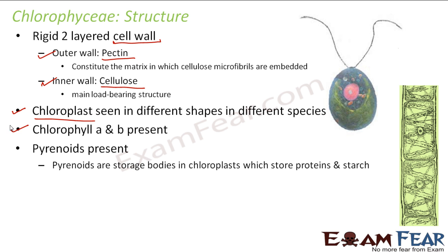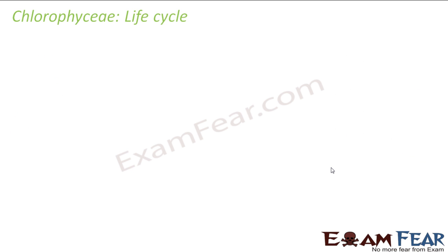Pyrenoids are also present in Chlorophyceae. Pyrenoids are storage bodies located inside the chloroplasts that store proteins and starch. Similar to how vacuoles in plant cells store food, pyrenoids are an additional storage body. However, unlike vacuoles which mostly store starch, pyrenoids store both starch and proteins.